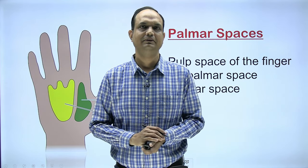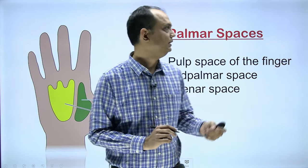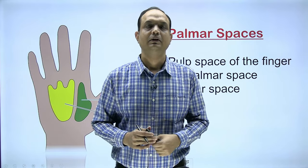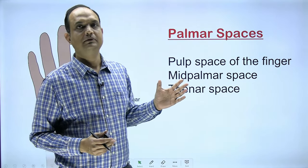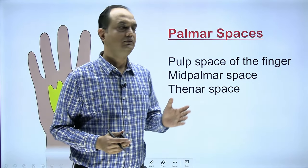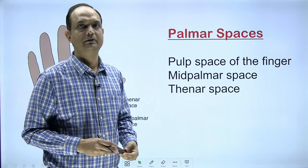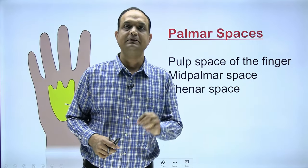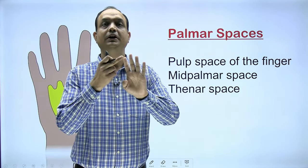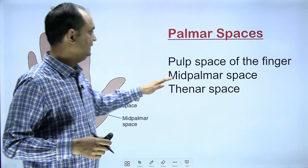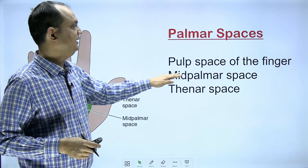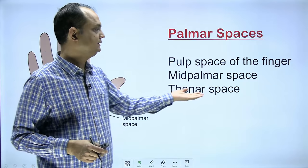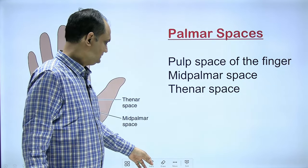Hello students, today we'll discuss the palmar spaces of the hand. There are three main names to keep in mind: one is the pulp space, which is present on the tips of your fingers; second is your mid palmar space; and the third is the thenar space. In today's lecture we will discuss these spaces one by one.